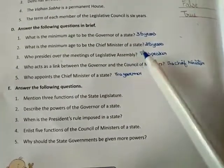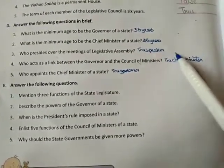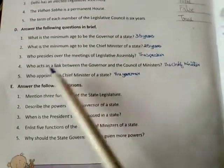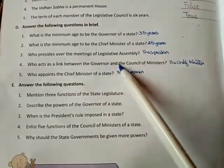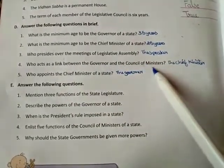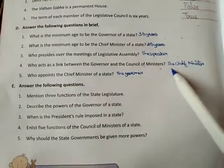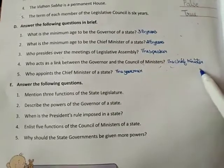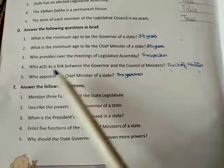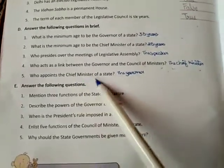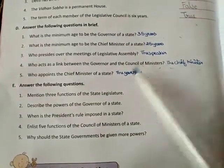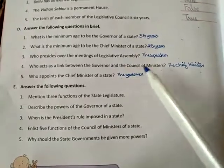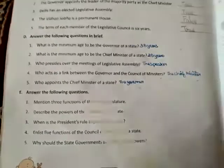Who acts as a link between the governor and the council of ministers? The answer is the chief minister. Who appoints the chief minister of a state? The answer is the governor.